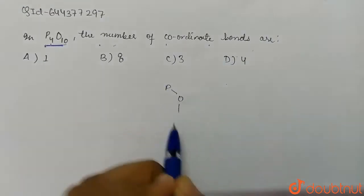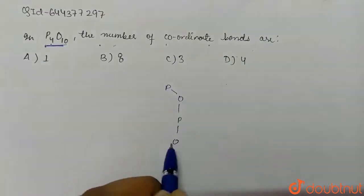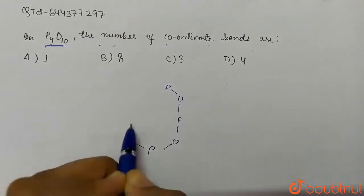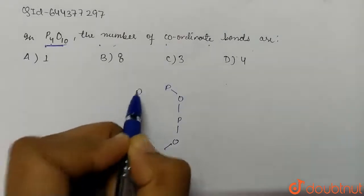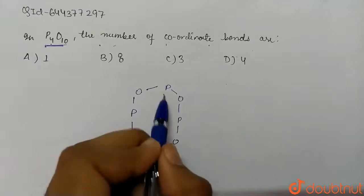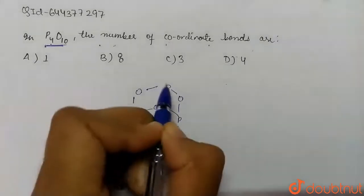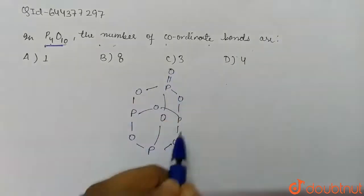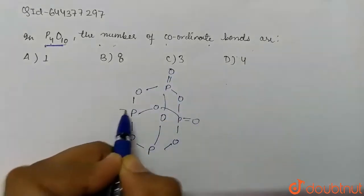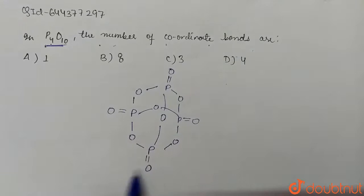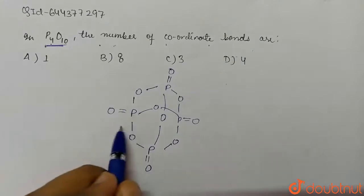Here we have P4O10 structure like this: here we have oxygen, then phosphorus, then oxygen, then phosphorus, and then we have one oxygen attached like this, and then we have double bond O, double bond O, double bond O, and double bond O. So this is the structure of P4O10.